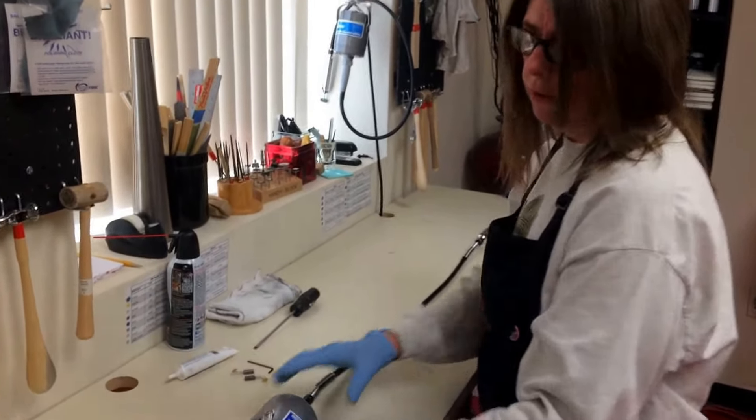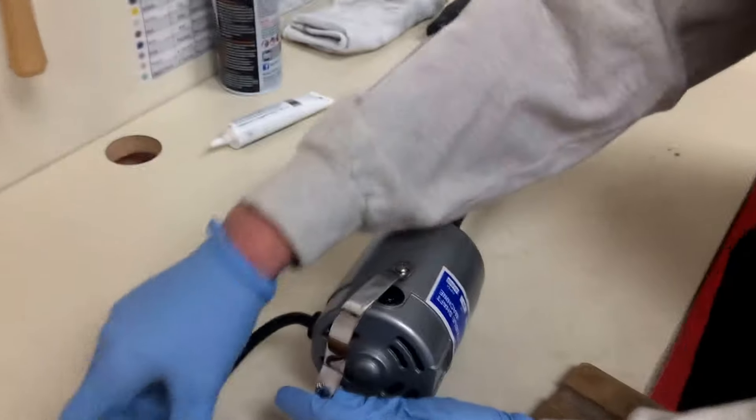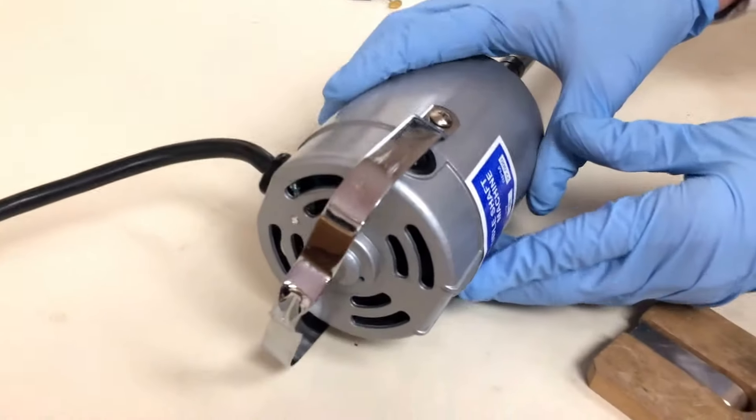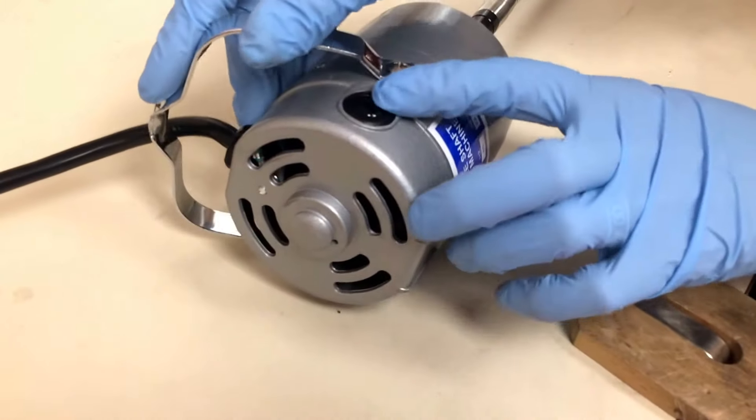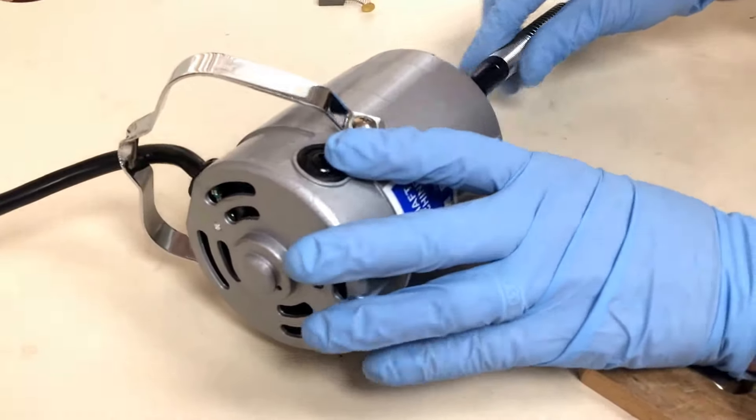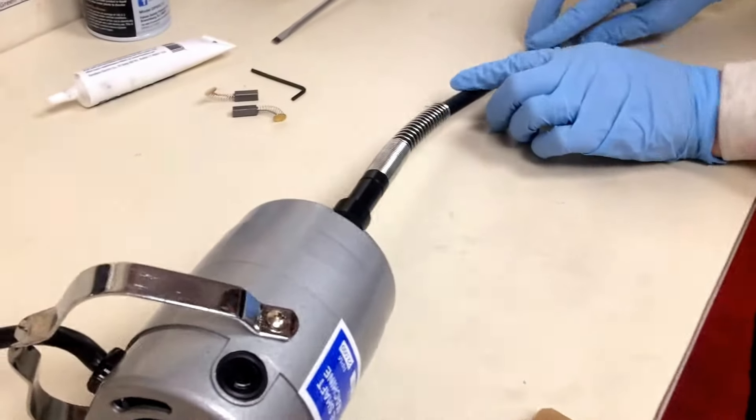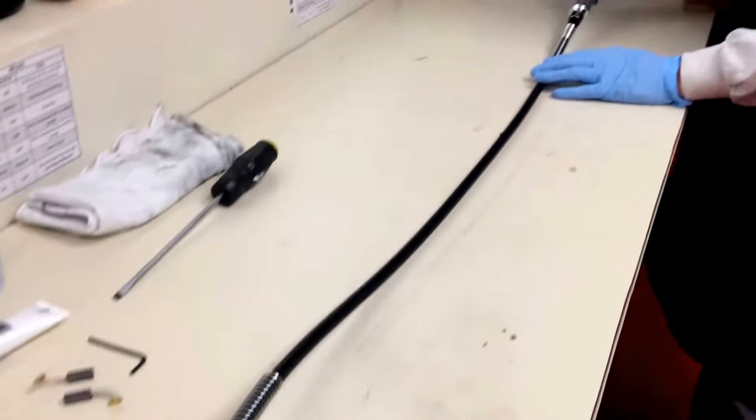Let me show you some parts to the flex shaft. So you have your handle, you have your motor, you have your brush caps, this is your sheath which covers your shaft, and down here is your handpiece.